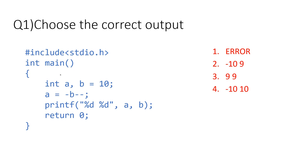The main function is given here and we have declared two variables of integer type. One is A and one is B, and B has been initialized to 10. In the next line, A is equal to minus B minus minus. Then in the next line we are printing two integers, A and B, and we have to choose what is going to happen. The options are: minus 10 and 9, or 9 and 9, or minus 10 and plus 10.